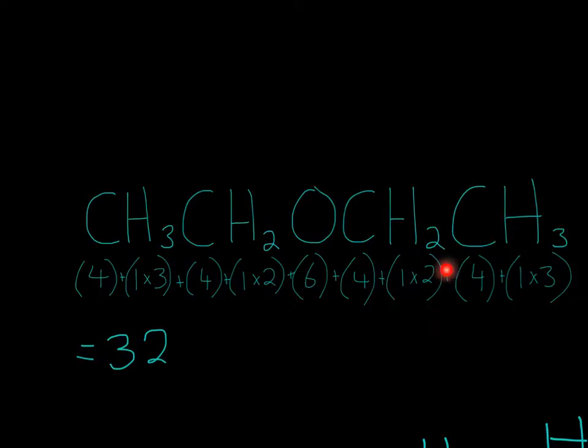4, hydrogen is 1, multiply by 2. Carbon is 4, hydrogen is 1, multiply by 3 to get 32 total electrons in your structure.